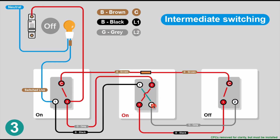Now we switch the intermediate switch on as well, with the first switch still on. Following the power both ways: going through the common it goes through the second two-way switch, through the intermediate, and just loops back to the live connection - not getting to the light. Following the grey wire the other way, it goes through the switch and crosses over, creating another loop. We're not getting to this connection. So the light is off.